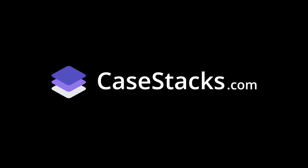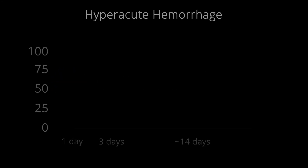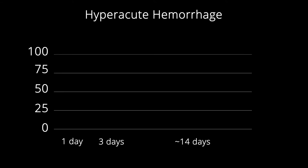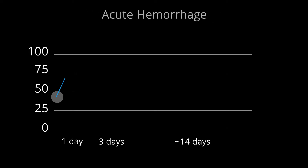This is Scott Jones with KStacks.com. Hyperacute hemorrhage can be relatively heterogeneous and low density, measuring 40 to 60 Hounsfield units. Within the first few hours of hemorrhage, blood will increase in density as a meshwork of fibrin is laid down. The attenuation of the blood products will rapidly approach 60 to 80 Hounsfield units. As the clot retracts, the attenuation value will continue to increase.